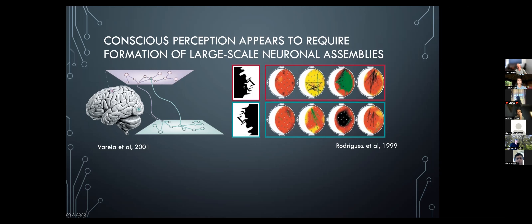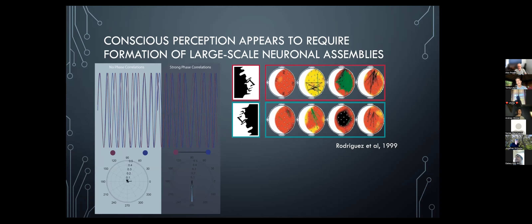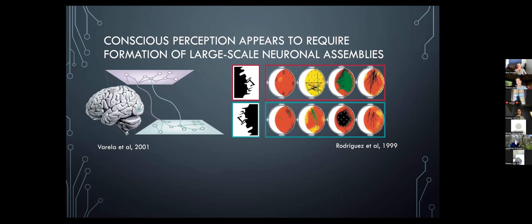The bottom line is there is a transient formation of a very large assembly of correlated oscillations when the person sees a face. This does not happen when they see something that doesn't make obvious sense. The primary band for those correlations is gamma — specifically in the 40 Hz range in EEG.